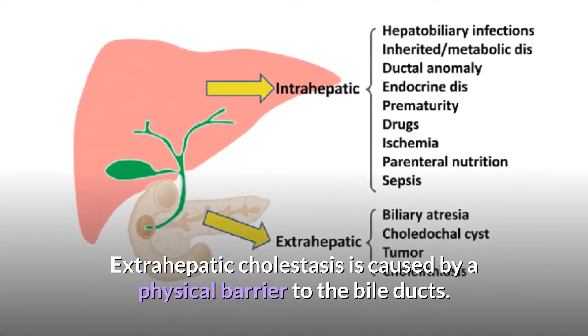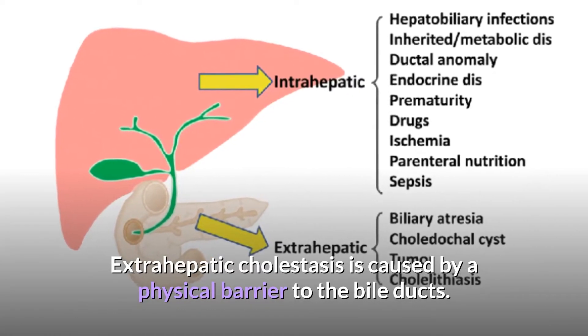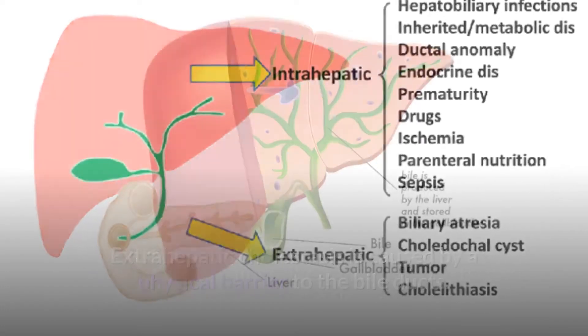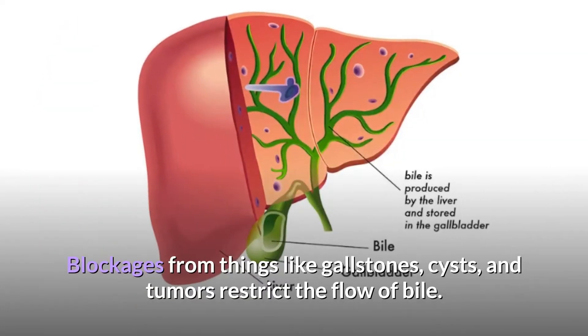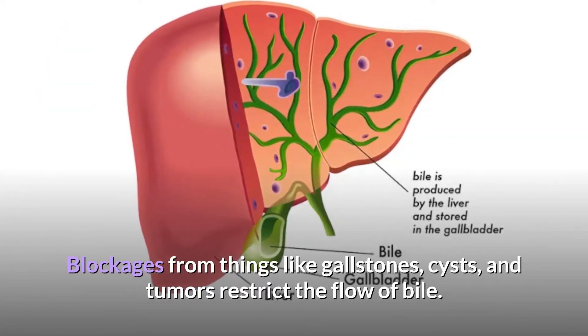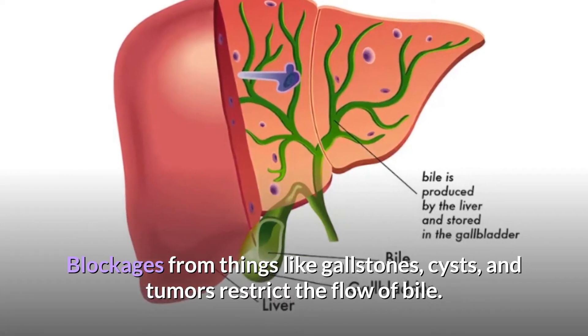Extrahepatic cholestasis is caused by a physical barrier to the bile ducts. Blockages from things like gallstones, cysts, and tumors restrict the flow of bile.